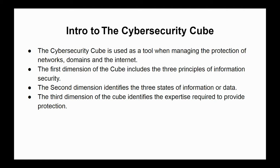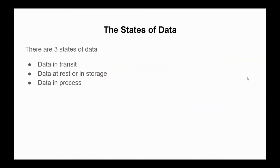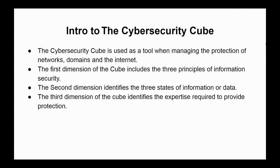The first dimension of the CUBE includes the three principles of information security. Cybersecurity professionals refer to the three principles as the CIA triad. The second dimension identifies the three states of information or data. The third dimension of the CUBE identifies the expertise required to provide protection, often called the three categories of cybersecurity safeguards.